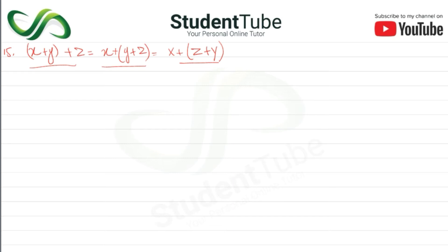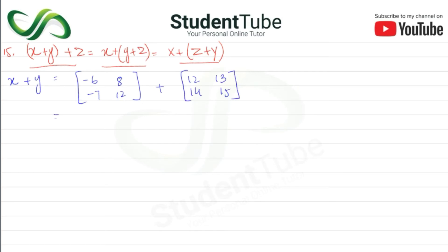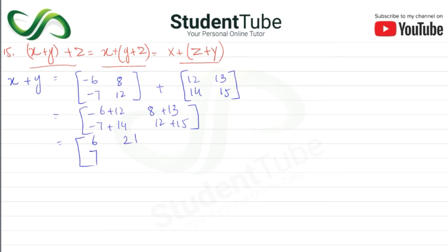First we will find X plus Y. X is [-6, 8; -7, 12] and Y is [12, 13; 14, 15]. Adding corresponding elements: -6 plus 12 equals 6, 8 plus 13 equals 21, -7 plus 14 equals 7, and 12 plus 15 equals 27. So X plus Y equals [6, 21; 7, 27].